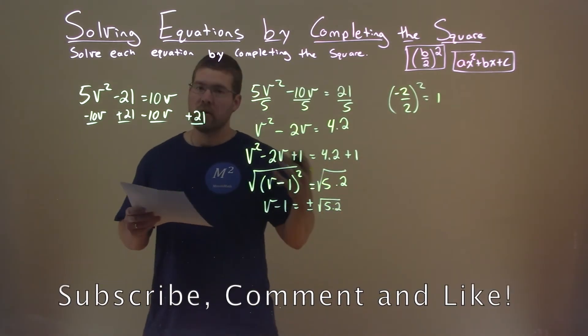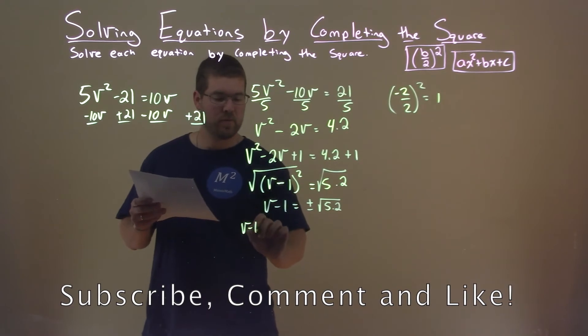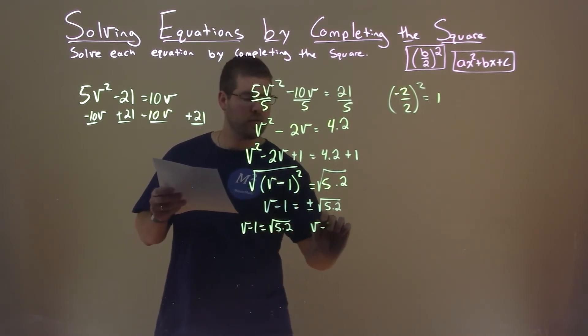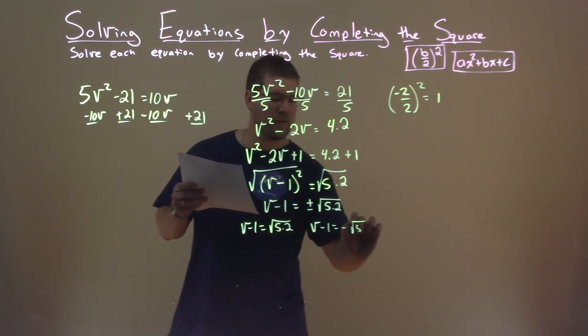Since it's plus or minus, we can write this as two equations. So v minus 1 equals a positive square root of 5.2, and v minus 1 equals a negative square root of 5.2.